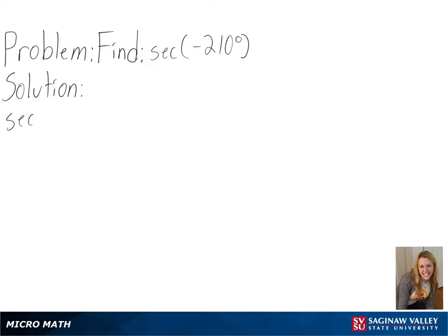Our problem is to find secant of negative 210 degrees. To solve this we will be using a unit circle.